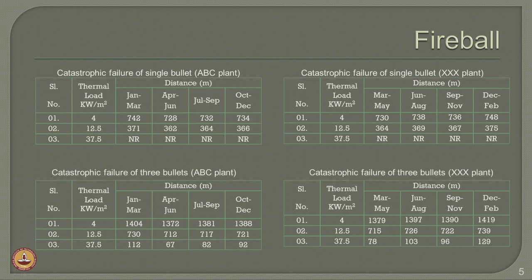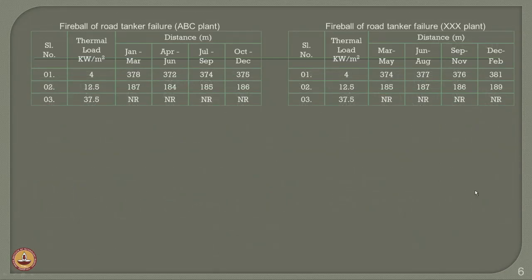The same distances keep increasing for the whole period of the year. When the thermal load varies from 4 to 37.5 and the cascade effect of three bullets occurs, the hazard distances for LFL arising from the fireball keep increasing. This is seen for both locations ABC and the XXX plant. Fireball can also arise from a road tanker failure at both locations, with hazard distances shown for three thermal load intensities: 4, 12.5, and 37.5 kilowatt per square meter.